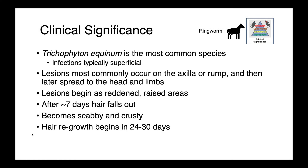In horses, Trichophyton equinum is the most common species, and just like in dogs and cats, infections are typically superficial. Lesions are most commonly on the axilla or rump, and then they spread to the head and limbs.